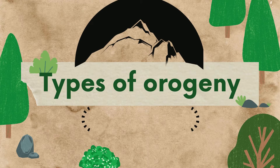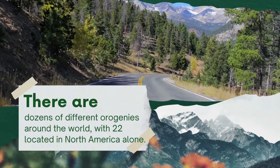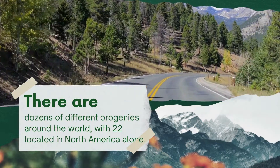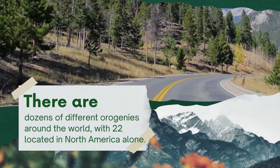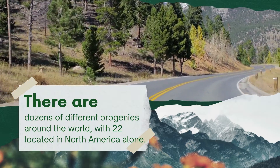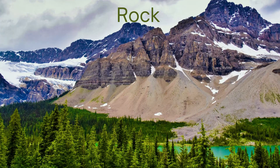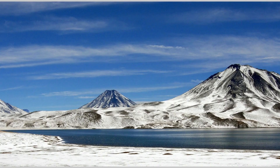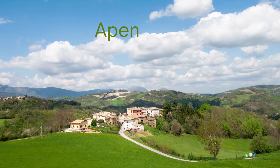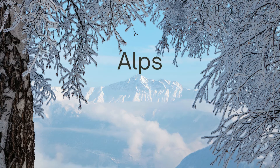So let's see some of the types of Orogeny. There are dozens of different orogenies around the world, with 22 located in North America alone. Alpine Orogeny took place in the Tertiary period and represents the youngest and newest mountain ranges of Earth. Examples include the Himalayas, Rocky Mountains, Andes, Apennines, Alps, etc.